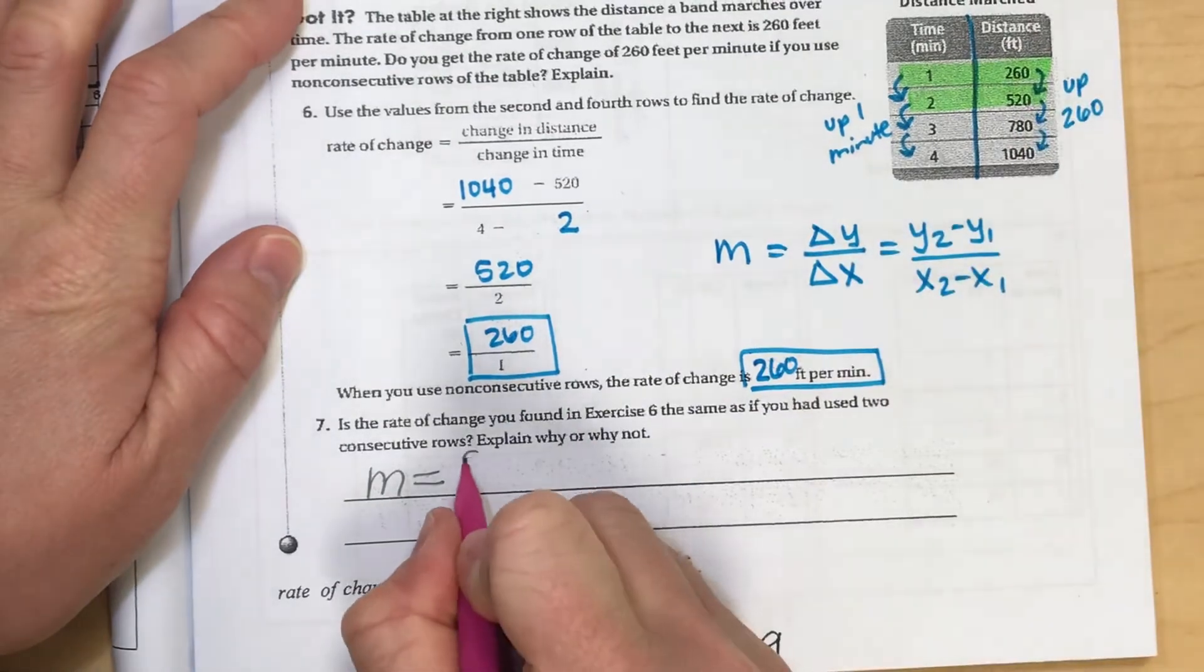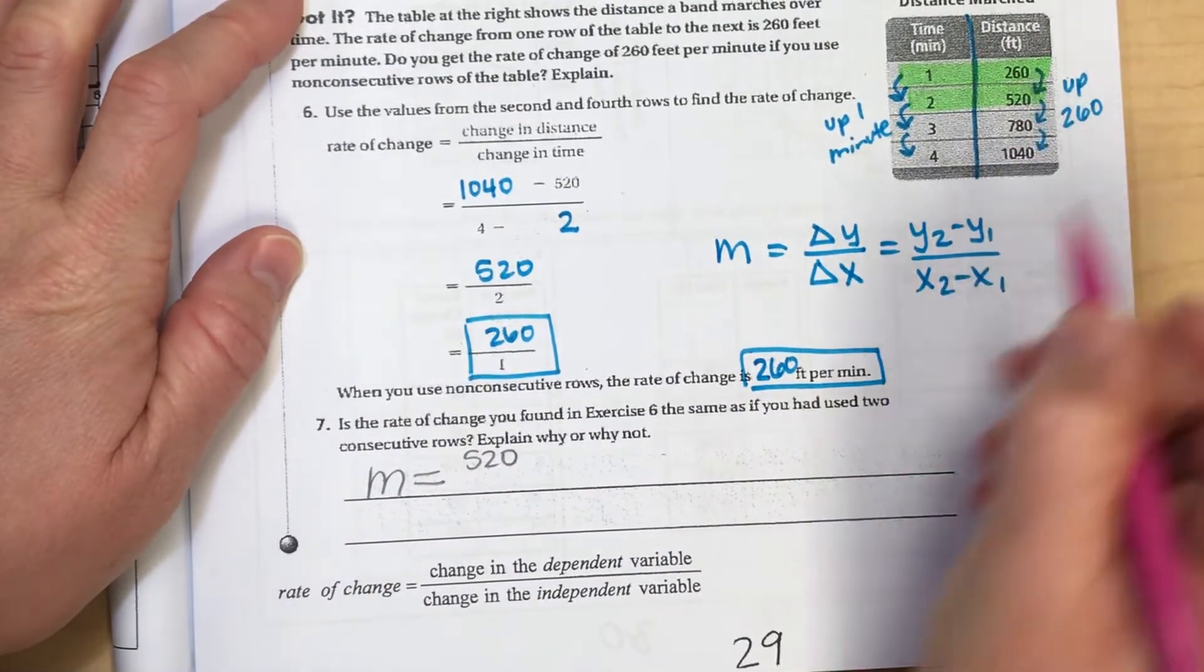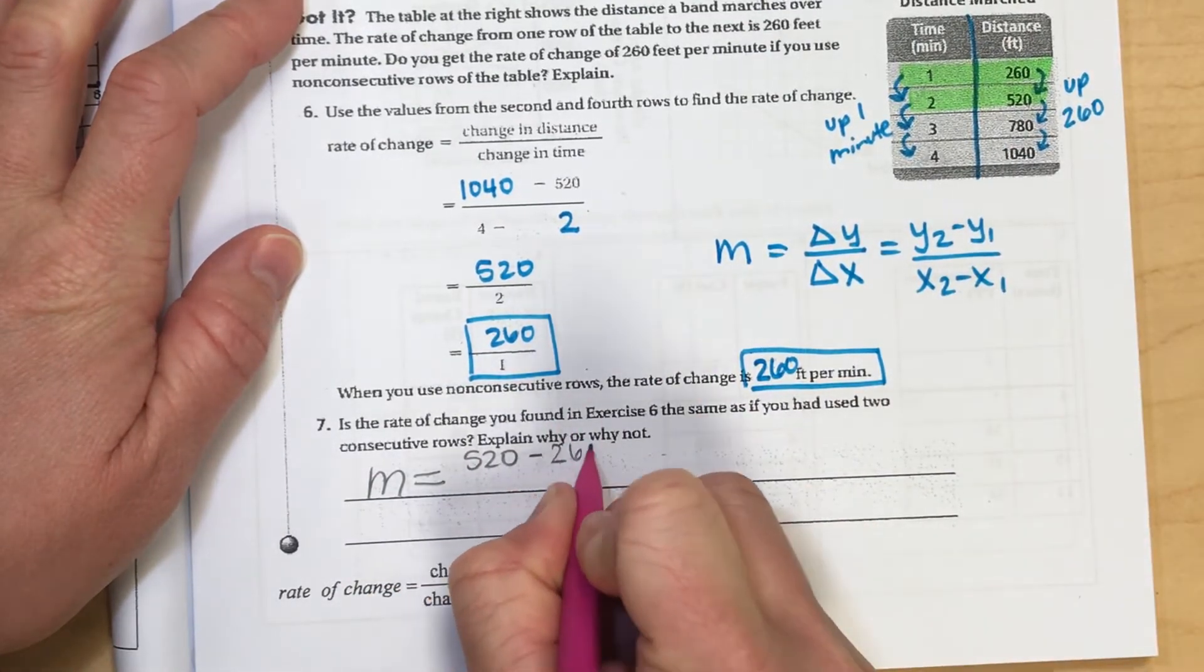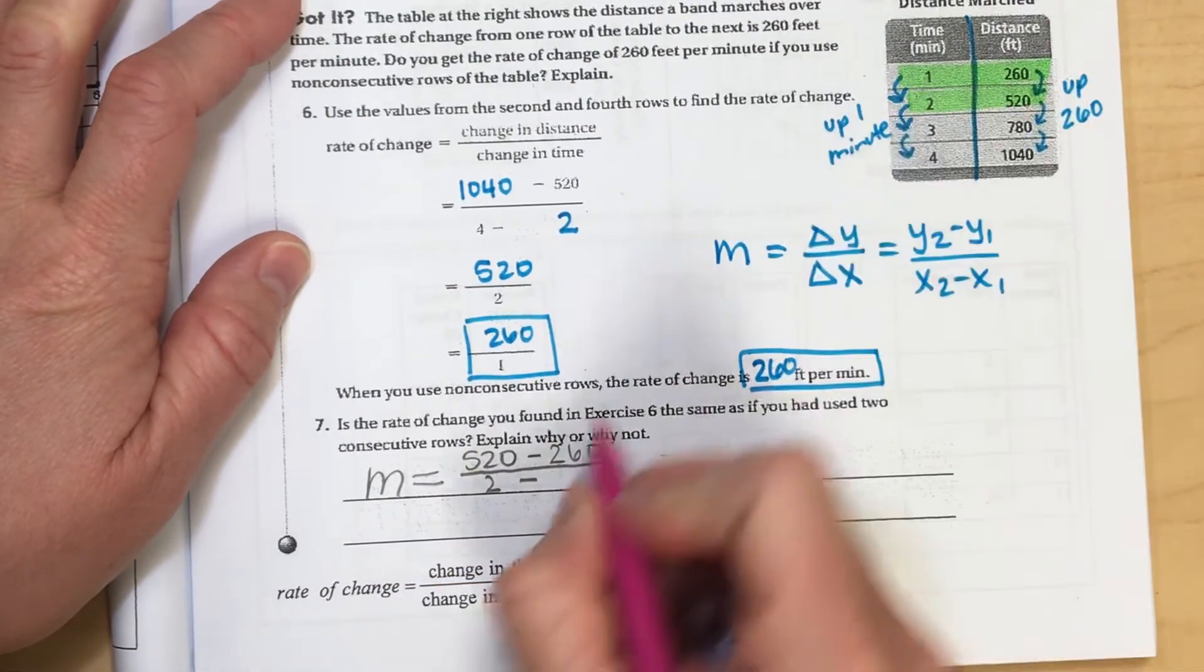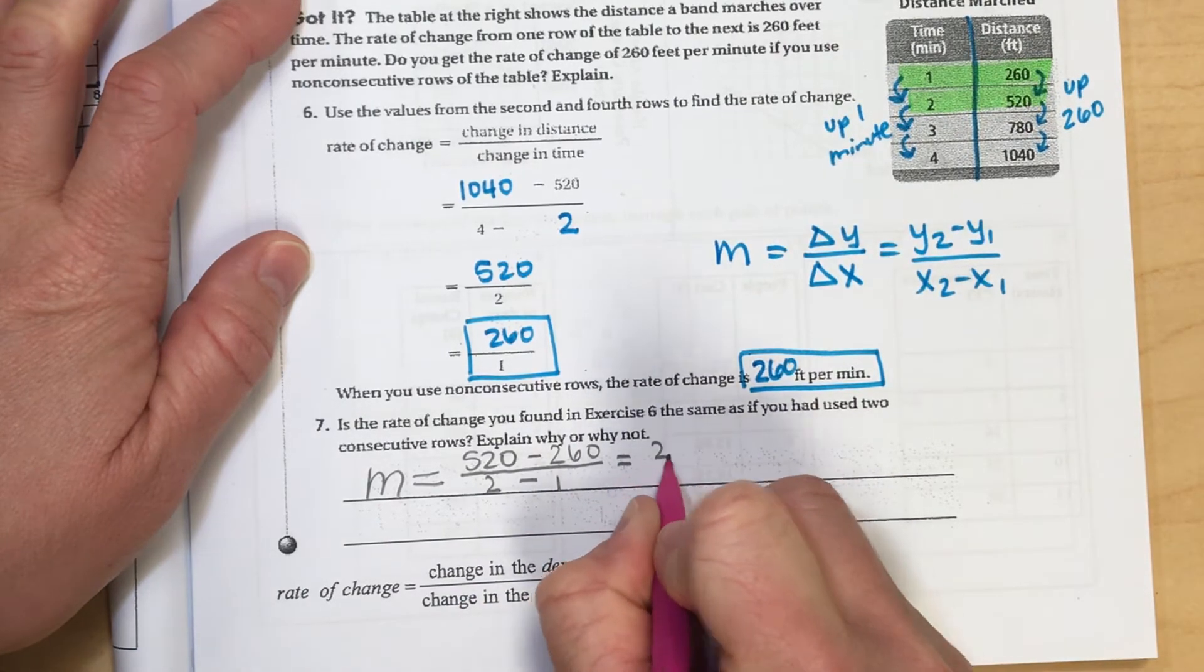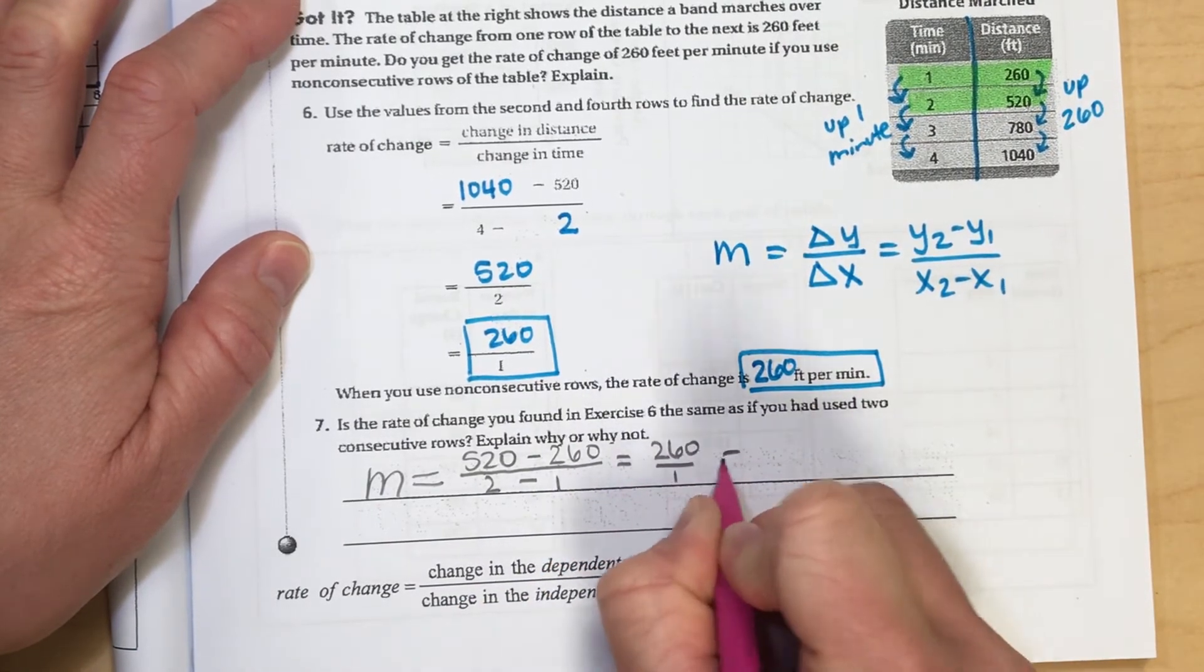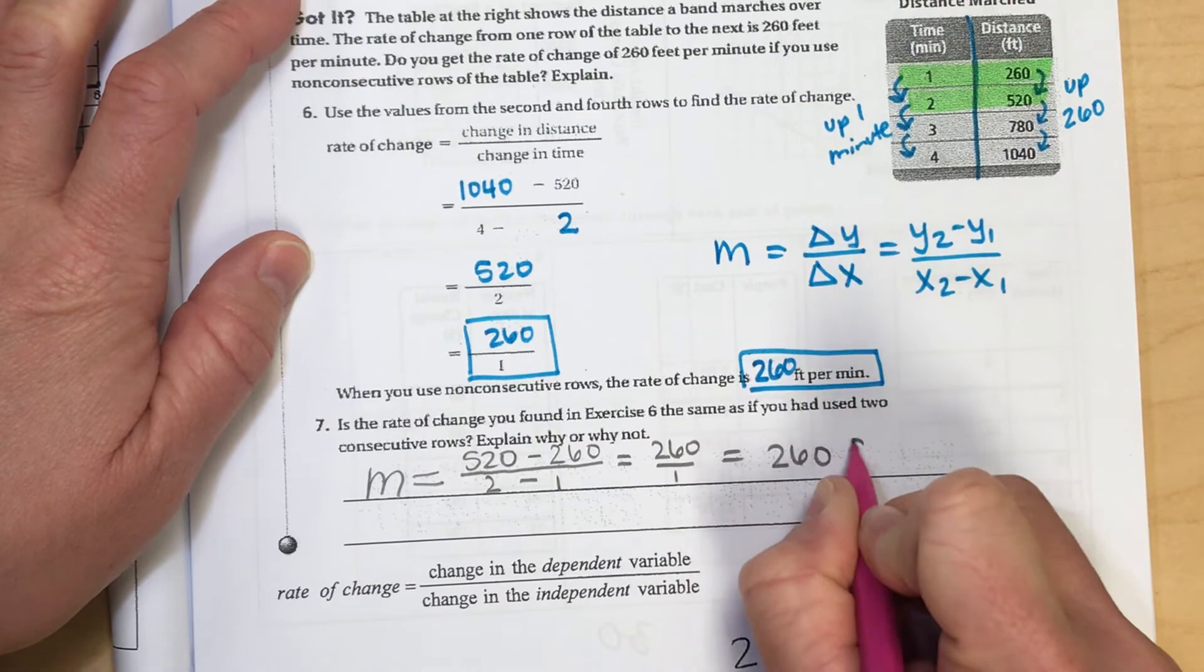So my second y is 520. My first y was 260. So that's y2 minus y1. My second x was 2 minus my first x of one is 260 divided by one, which is 260 feet per minute.